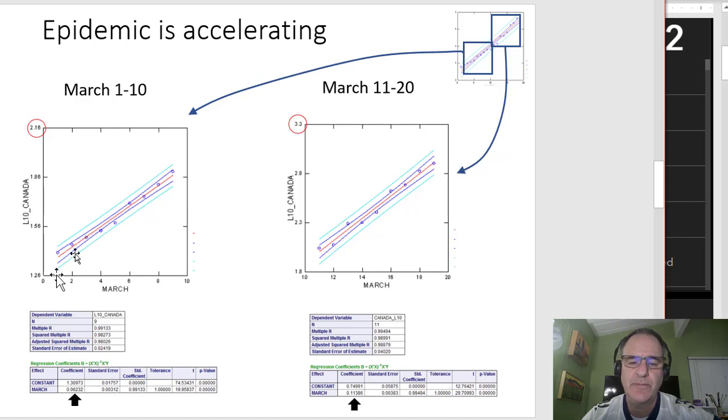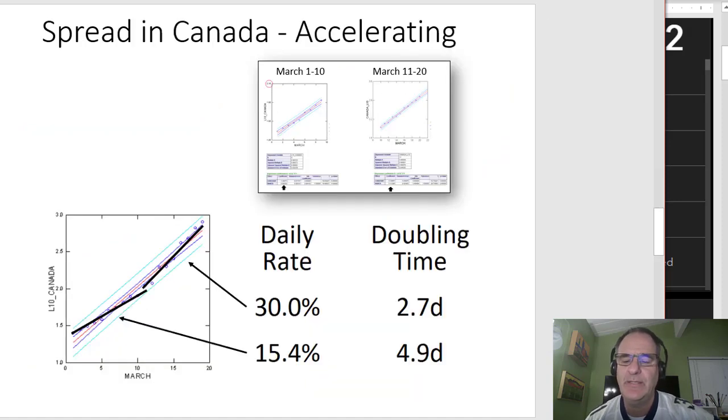If we fit the model for the first 10 days of March we get a slope that's much more shallow than if we fit the model for the next 10 days in March. In fact the doubling rate that we observed in the early part of March was 15 percent per day growth so about five days doubling time. We're seeing much closer to a 30 percent growth rate right now which is something close to just a little less than three days doubling time so that's quite substantial.